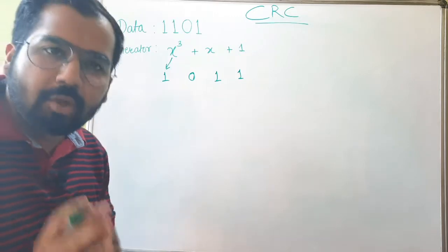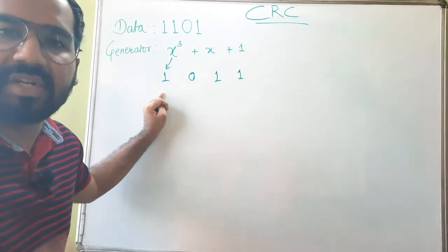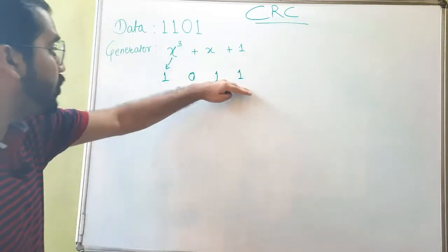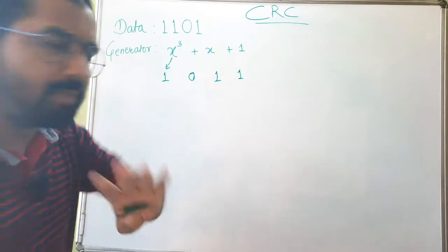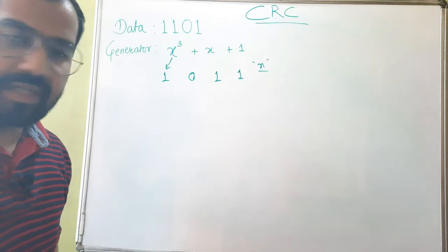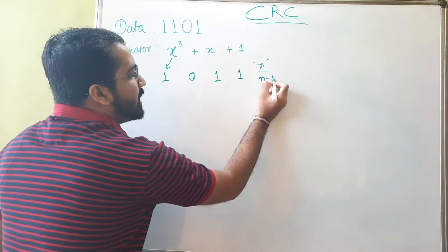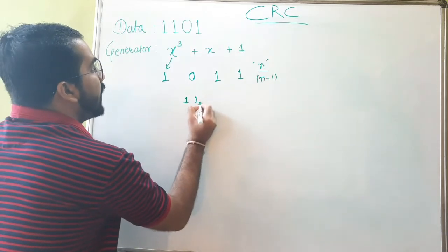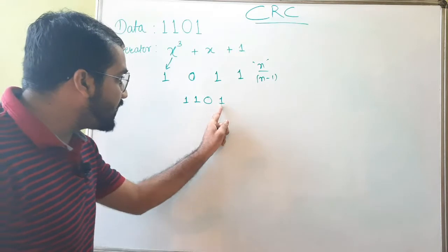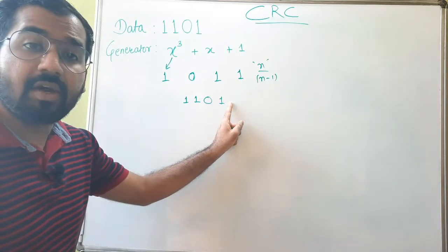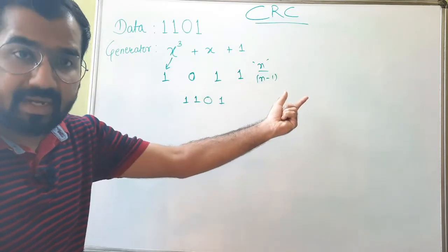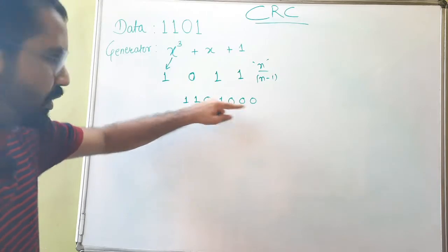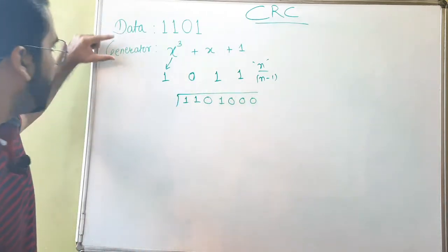Now at the sender side, count the bits of the generator — there are 4 bits. If the generator has n bits, then you append n minus 1 zeros at the end of your data. Our data is 1 1 0 1, and since n equals 4, n minus 1 equals 3, so we append 3 zeros at the end of the data. This gives us the extended data to be divided.